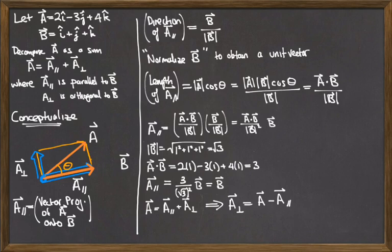So all we have to do is do that subtraction now. I'm going to take A minus, well, my vector A parallel was B, and you can do the subtraction. I'm going to take the corresponding components of my vectors, subtract them, and I get I minus 4J plus 3K.